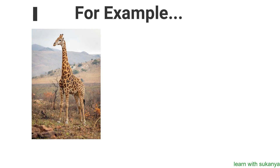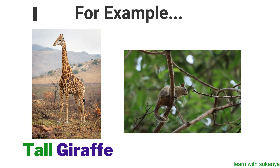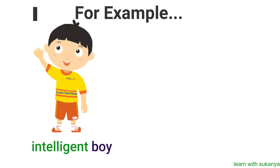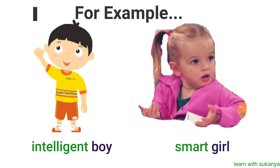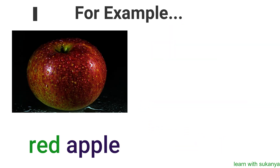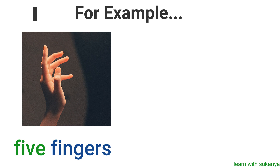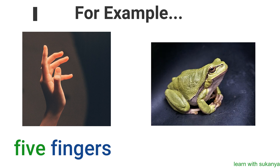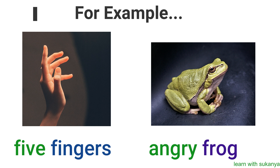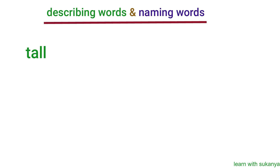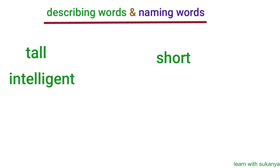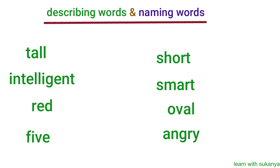For example: tall giraffe, short squirrel, intelligent boy, smart girl, red apple, oval egg, five fingers, angry frog. Here the words tall, short, intelligent, smart, red, oval, five, and angry are describing words.